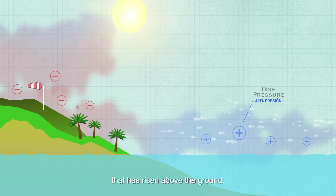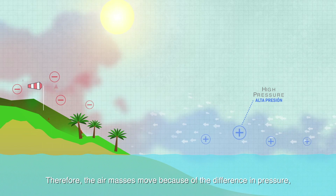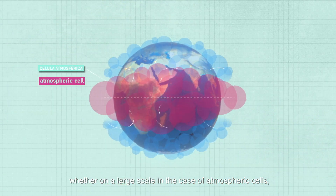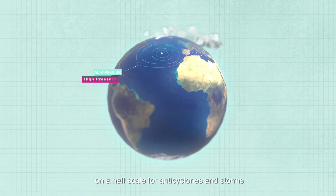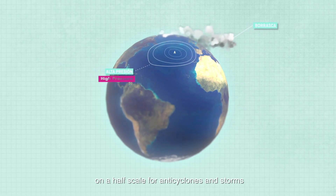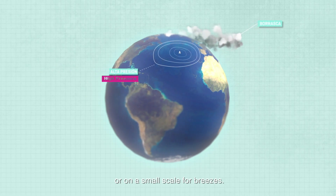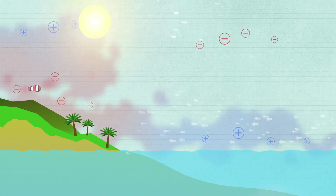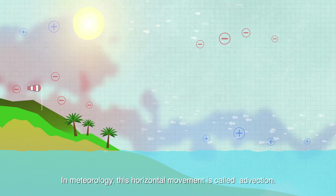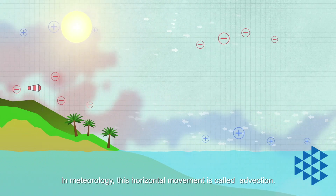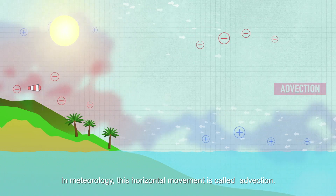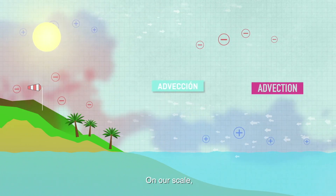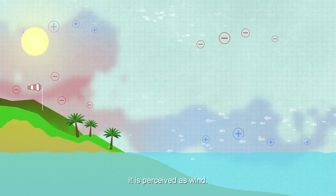Therefore, air masses move because of the difference in pressure — whether on a large scale in the case of atmospheric cells, on an intermediate scale for anticyclones and storms, or on a small scale for breezes. In meteorology, this horizontal movement is called advection; on our scale it is perceived as wind.